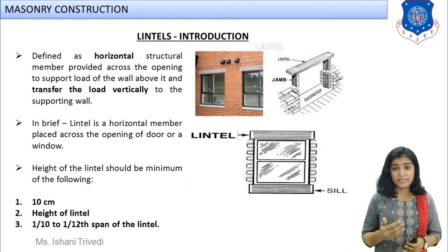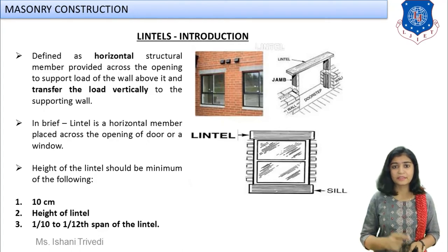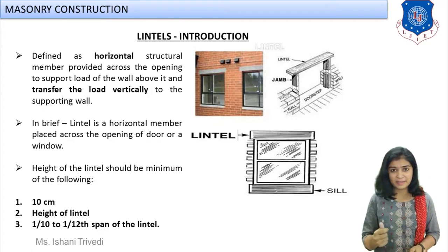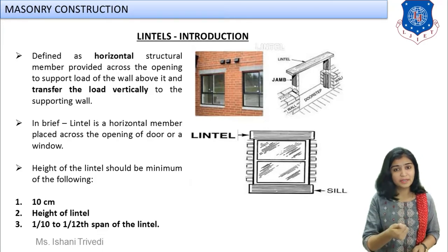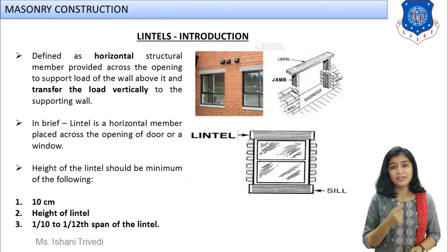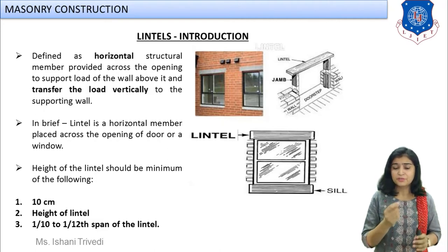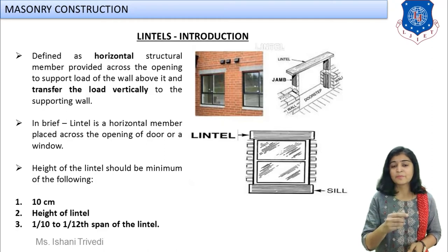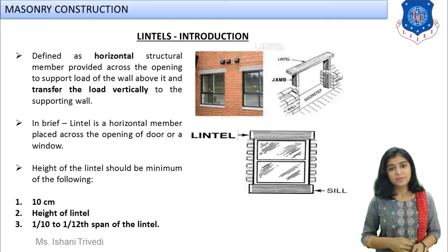Now let us talk about the thumb rule. It says the height of the lintel should be the minimum of three conditions: first, 10 centimeters as a standard dimension — one brick thickness gives you 10 centimeters; second, the design height of the lintel according to the loads on the opening; and third, 1/10 to 1/12 of the span of the lintel. Whichever of these three values is minimum is your lintel height.